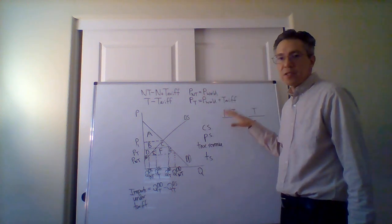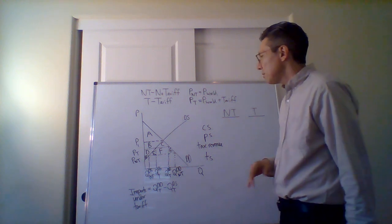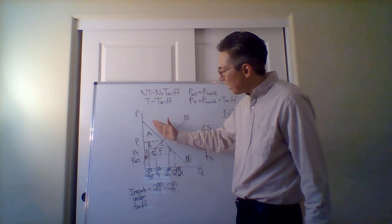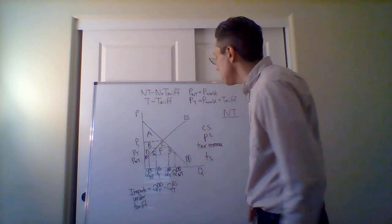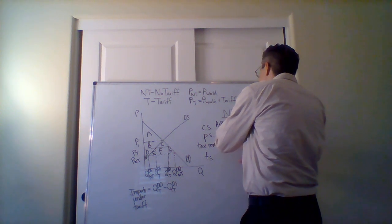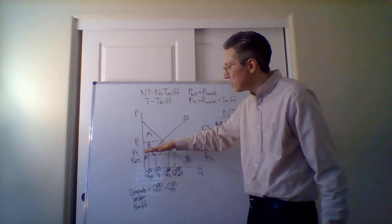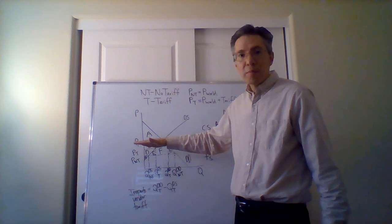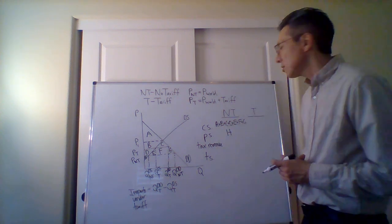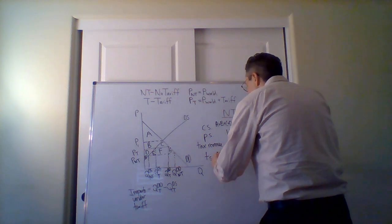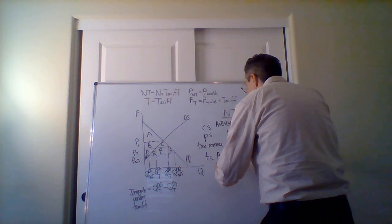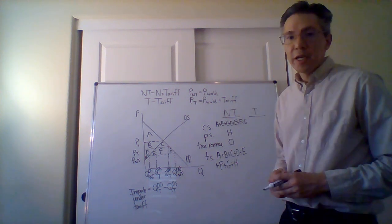Starting with the no-tariff case — what is the consumer surplus? The price is down here at the world price, so consumer surplus is the area under the demand and above that price, which is A plus B plus C plus D plus E plus F plus G. What is the producer surplus? It's the area below the price and above the domestic supply, which is H. There is no tax revenue since there's no tariff, so that's zero. The total surplus is simply A through H.